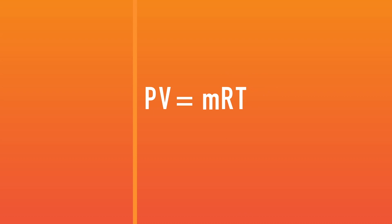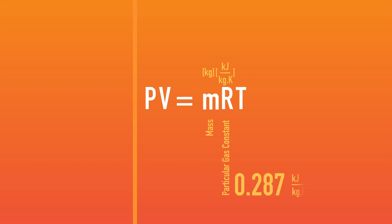Therefore, R is unique for each gas. Now our equation of state has mass and particular gas constant. For instance, R for air is 0.287 kJ per kilogram Kelvin.